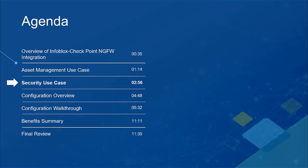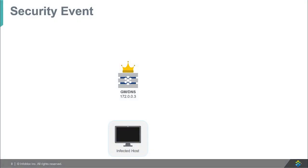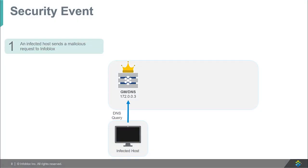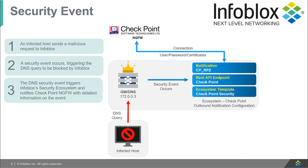Now let us look at the next use case that involves a DNS security event. This use case demonstrates how Infoblox adds an infected host to a security group within Checkpoint's Next Generation Firewall. First, an infected host sends a malicious request to the Infoblox grid. Then the malicious request triggers an RPZ rule within the Infoblox grid, effectively blocking the request. The security event also triggers a notification prompting the Infoblox grid to send information regarding the event to the Checkpoint Next Generation Firewall. The device is then placed in the Checkpoint security group where it can be quarantined with preventative policies applied by administrators.